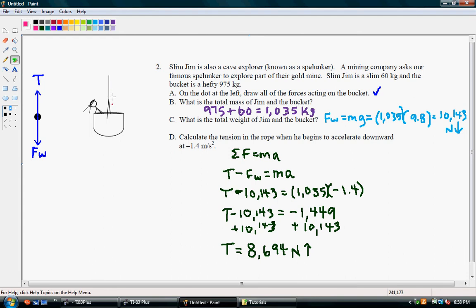So think about what's going to happen to the tension when something's moving down with an acceleration. The tension is going to be a little bit less because the rope doesn't have to work so hard to support this because it's falling. So we can expect our tension to be a little bit less than our force of weight in this situation. And that's exactly what we have. So we have 8,694 and that's less than 10,143.